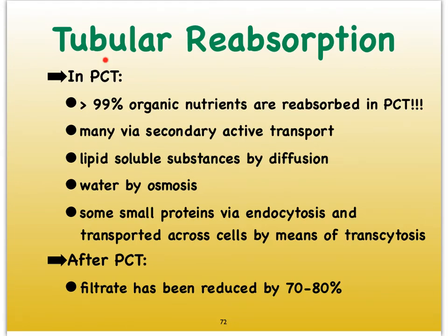Reabsorption in the proximal convoluted tubule is extremely efficient. Almost all of the organic nutrients — all the carbohydrates, all the amino acids, all parts that made up nucleic acids, all small lipids — are going to be reabsorbed into the blood surrounding the proximal convoluted tubules. Many of them are going to depend on secondary active transport, which you were introduced to in the digestive system, and I'll quickly review it here.